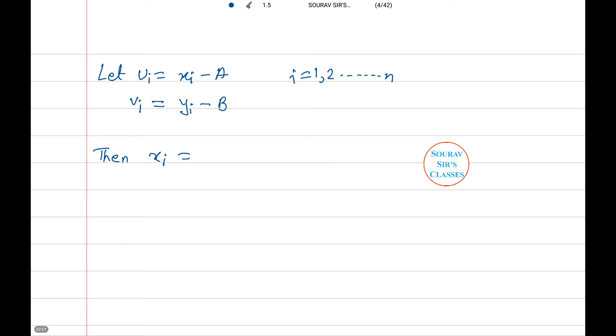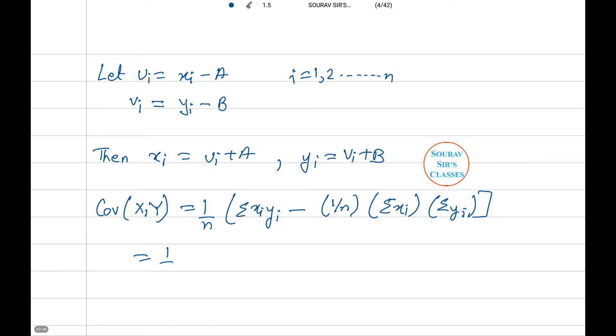We are given the above formulas. Now xi equals small ui plus A and yi equals vi plus B. Substituting these values in the formula, we have covariance X comma Y equals 1 by N summation XiYi minus 1 by N summation Xi summation Yi.